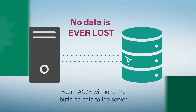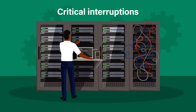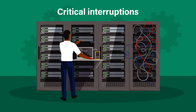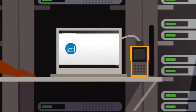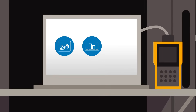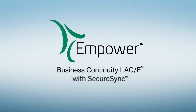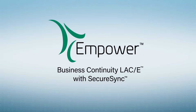But if there's a long critical interruption — for example, caused by a natural disaster or a cyber attack — this is a problem. You won't be able to create new sample sets, process and report results, or send data to the server, because the information can't be transferred to the LACE. This is where Business Continuity LACE with SecureSync can help.